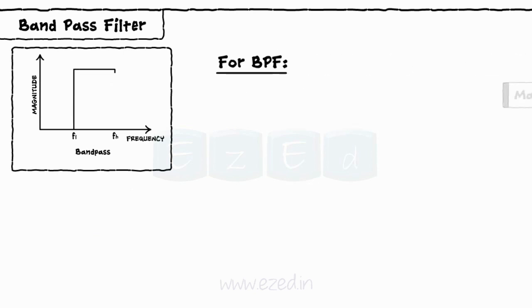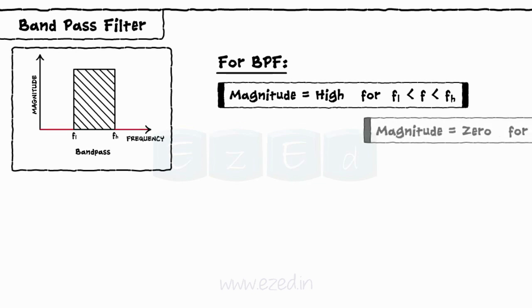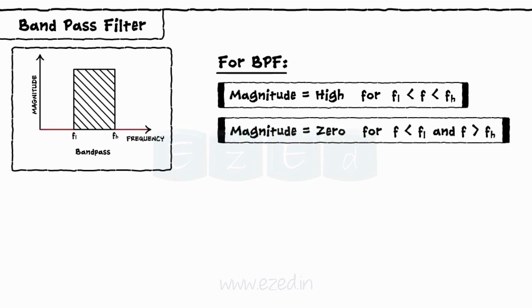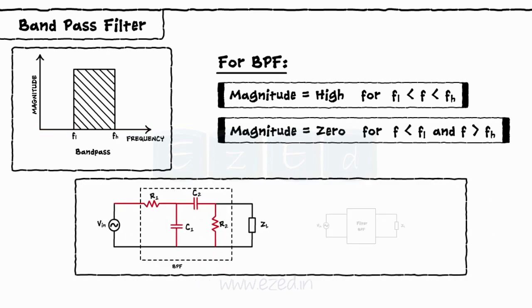Band pass filter allows only the frequencies between these two thresholds and gives zero magnitude for all other frequencies. Practically, a band pass filter is the combination of low pass filter and high pass filter.